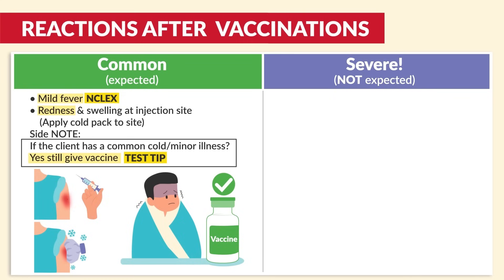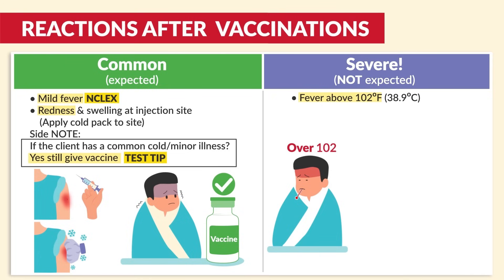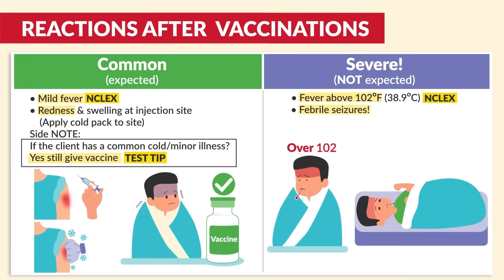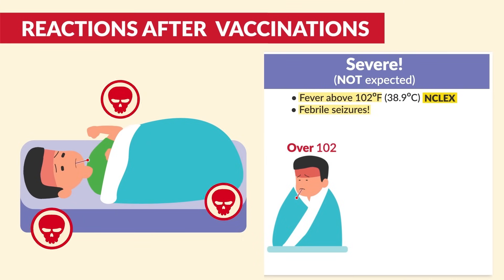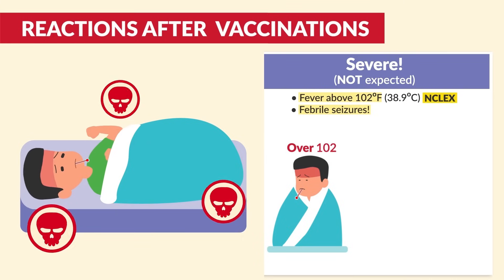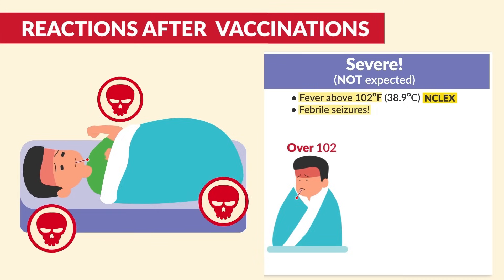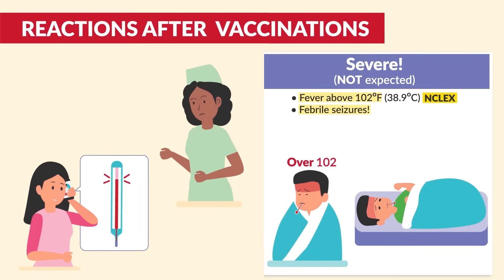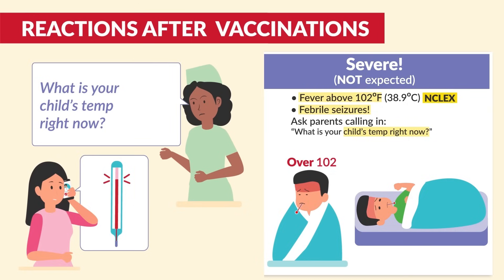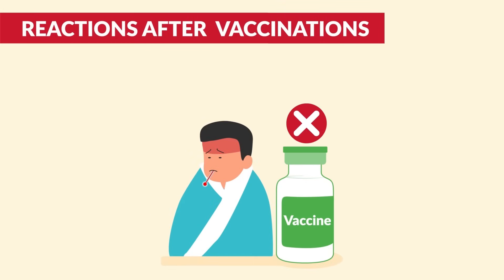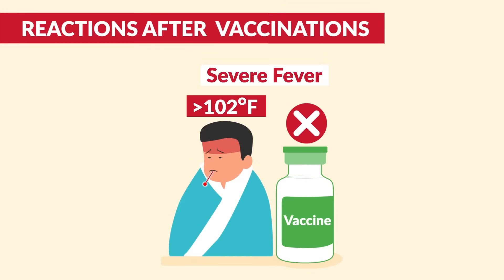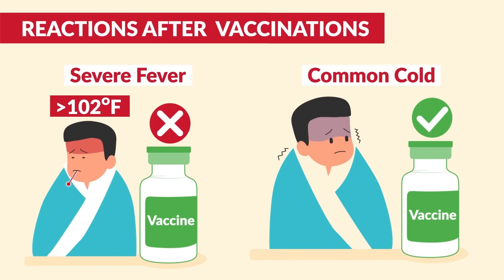Some severe reactions that are not expected — be sure to write this down: a fever above 102°F or 38.9°C, a big NCLEX tip, as well as febrile seizures. Fevers so high that the baby can go into convulsions. The key number is 102°F — this is not expected and is considered a very severe reaction. If parents call about a high temperature, ask what the child's temperature is and administer acetaminophen (brand name Tylenol). We do not give routine vaccinations to any child with a severe fever, but we can give it to clients with a common cold. The key term is a severe fever over 102.